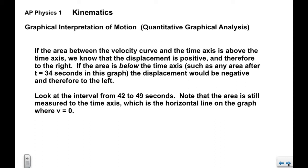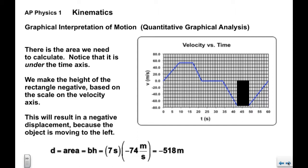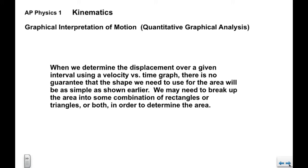For the interval from 42 to 49 seconds, the area is measured up to the time axis. We make the height of the rectangle negative based on the scale, so the area is base times height, giving a negative displacement — which we'd expect because the object is moving to the left. When determining displacement over a given interval, the shape may not always be simple. We may need to break it up into a combination of rectangles and triangles and calculate each area, then add them up.